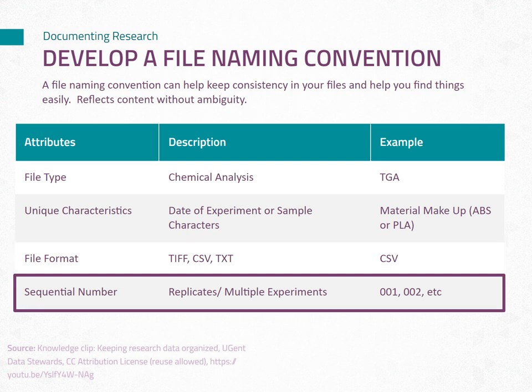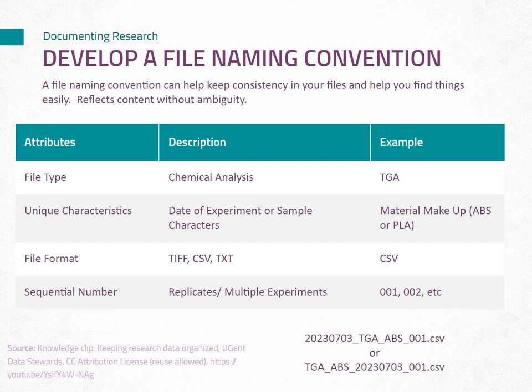When conducting multiple replicates in each experiment, using sequential numbers in your file names can distinguish between similar files. Replication of an experiment with multiple specimens allows for meaningful statistical analysis. Notating the replicate number in the file name ensures easy identification of each replicate. Including the experiment date in the file name provides another layer of identification. While the creation date of the file can change to the last modified date when viewing the file in your file explorer, the experiment date is a constant value. Including it in your file name helps you easily relate the file back to your research plan and stay organized.